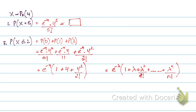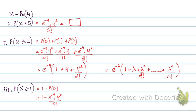For probability of x greater than or equal to 1, we know that the Poisson distribution is infinite, so what we do is use the complement: 1 minus probability of 0. This would be 1 minus e to the power minus 4, multiplied by 4 to the power 0 upon 0 factorial, and we compute the answer from there.